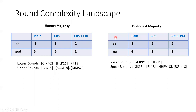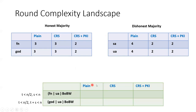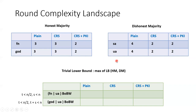Next, for the dishonest majority setting, four rounds are known to be necessary and sufficient for selective and unanimous abort in the plain model. However, in the CRS and CRS plus PKI setups, two rounds is the optimal round complexity for these security notions with abort. Our goal was to study the exact round complexity for the two classes of best of both worlds protocols in these three different types of setup. One trivial observation is that any lower bound for the individual settings translates to a lower bound for best of both worlds, since BoBW guarantees are strictly stronger and subsume the individual guarantees.